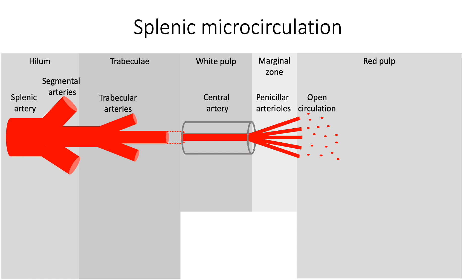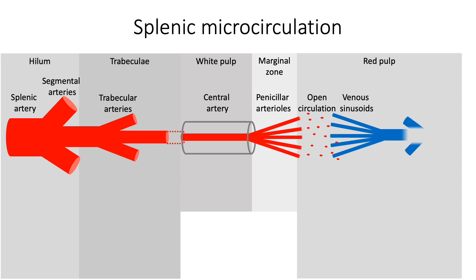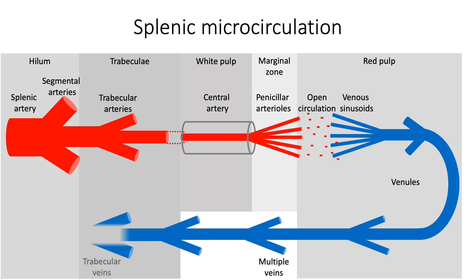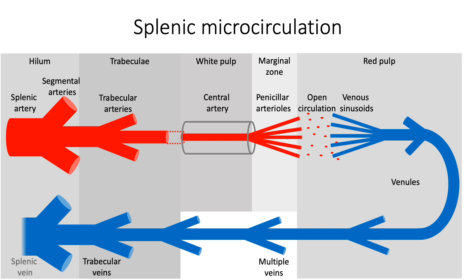Blood from this open circulation in the red pulp is then collected by the venous sinusoids, which join to form smaller venules, which then join to form veins of increasingly larger size. Finally, they drain into the trabecular vein and into the splenic vein.